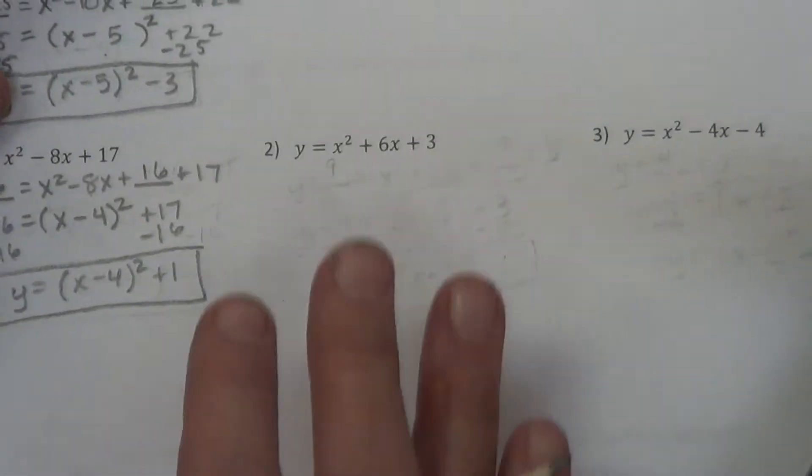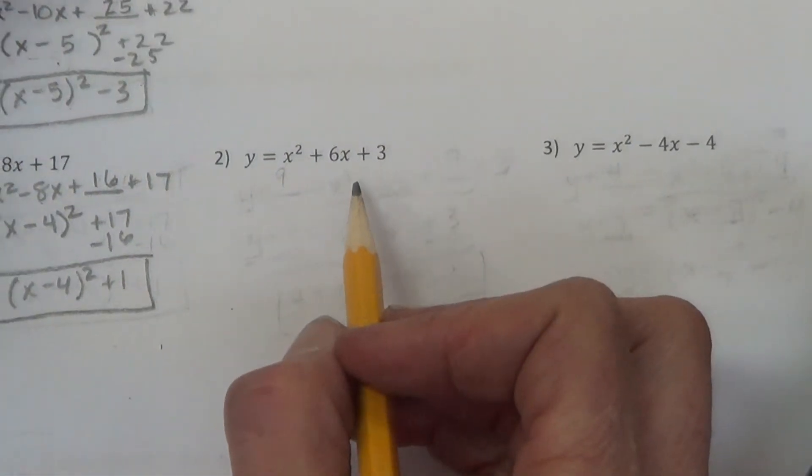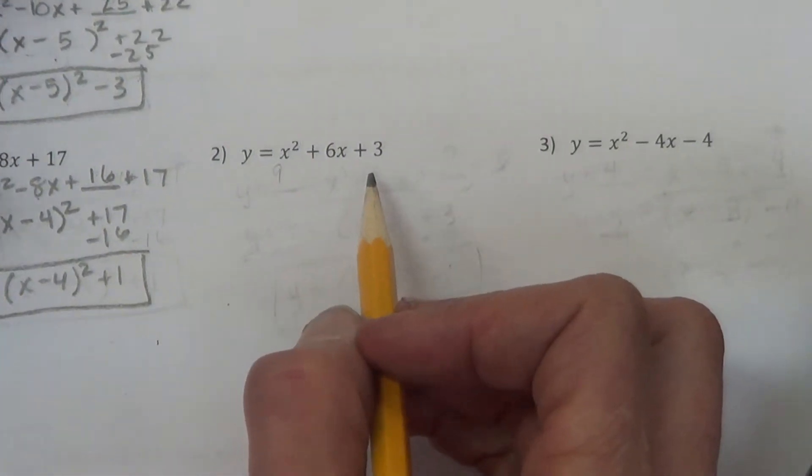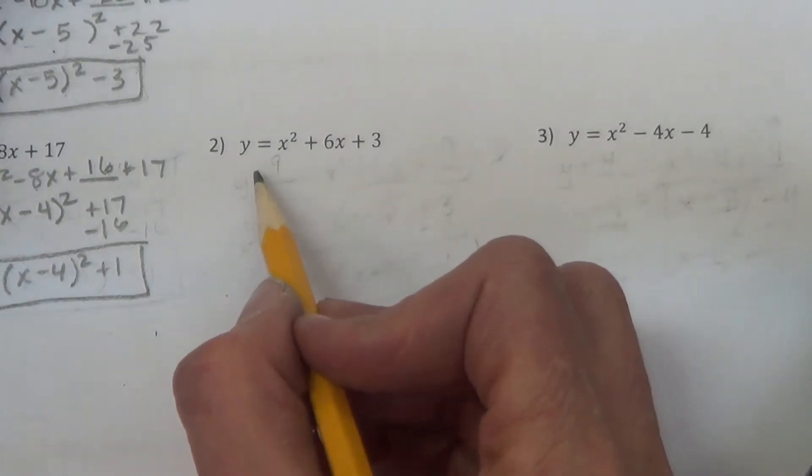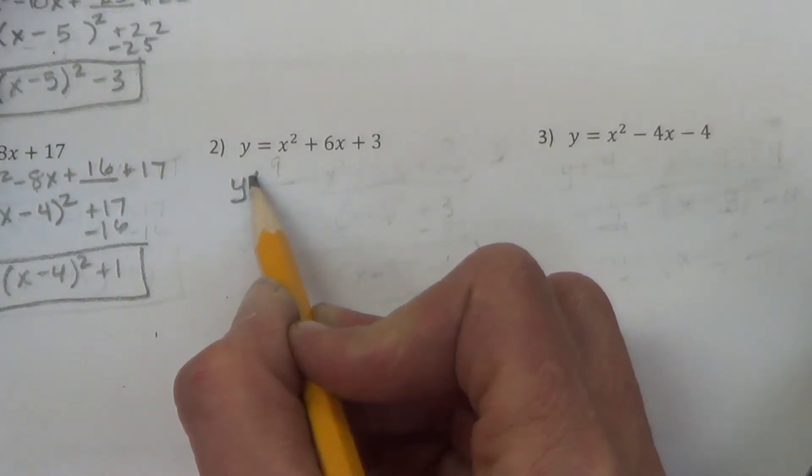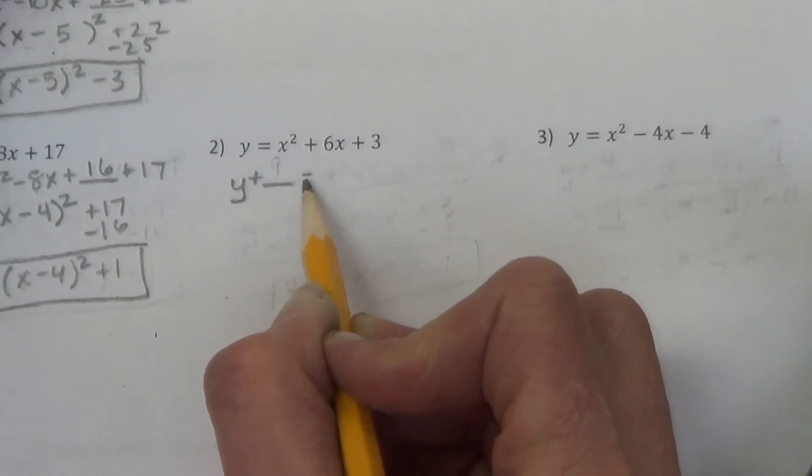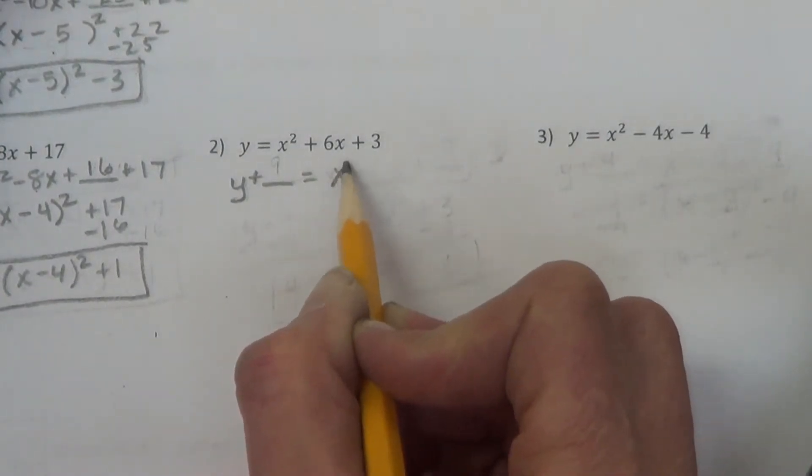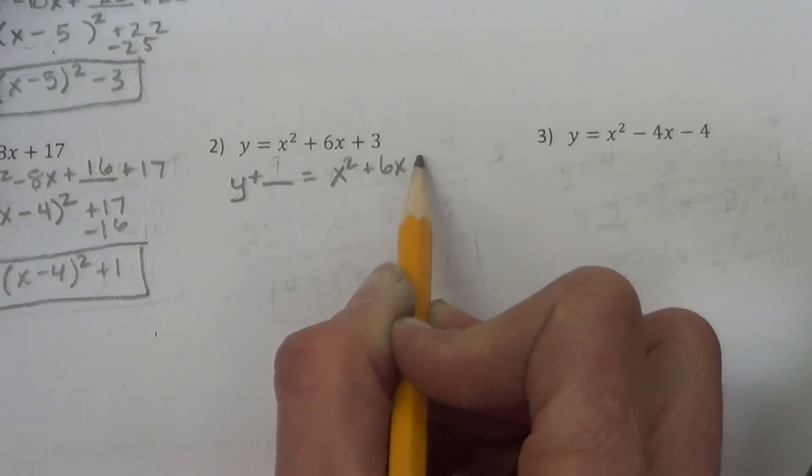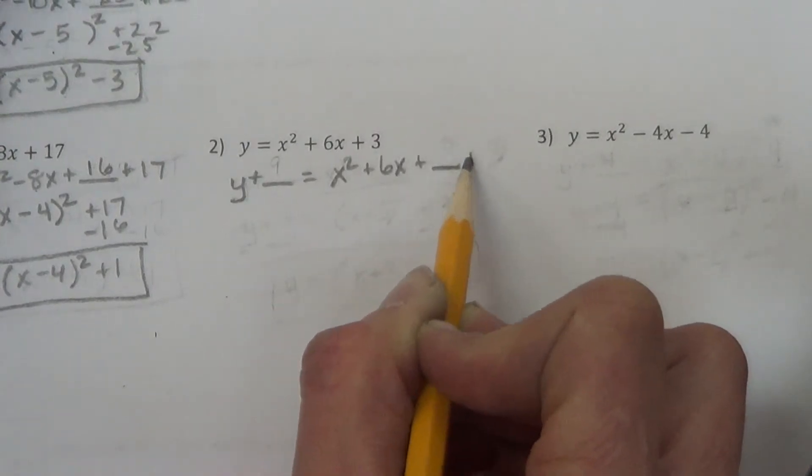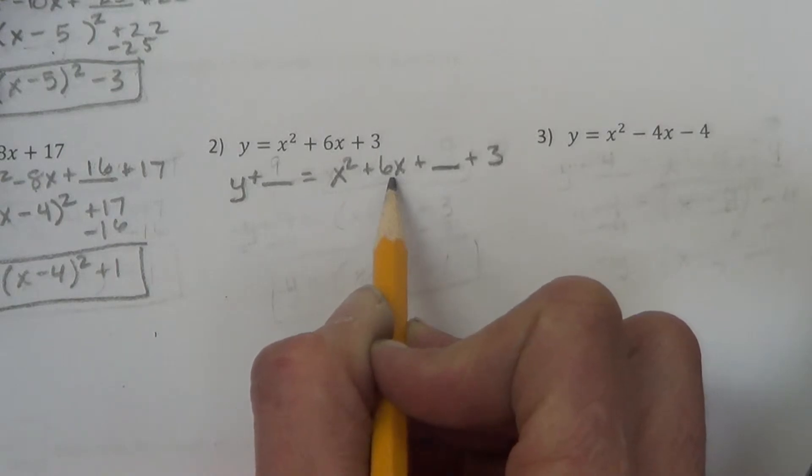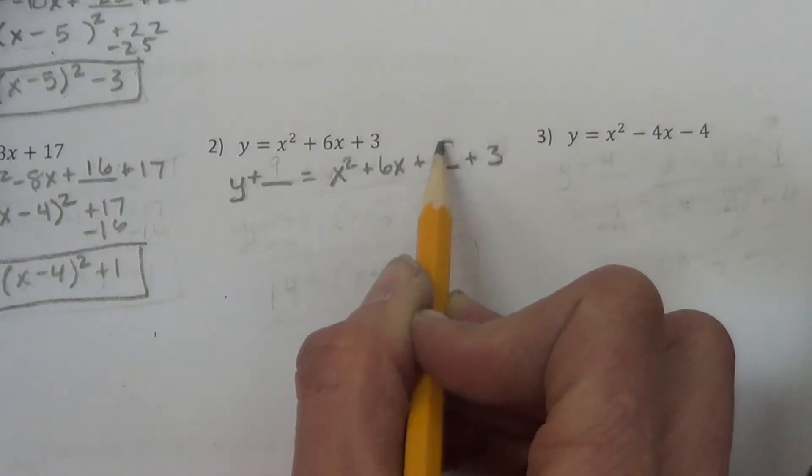Next one. At this point, I'd suggest you pause the video and do this one alone and then turn it back on and see if you did it right. We have y plus blank equals x squared plus 6x plus blank plus 3. Half of 6 is 3. Squared is 9.